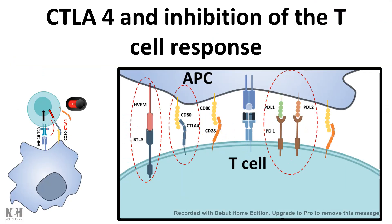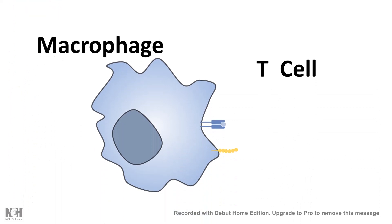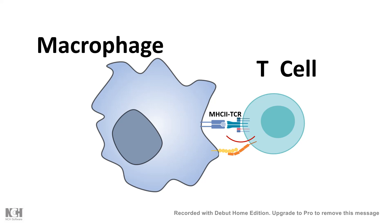In this video, I'm going to talk about CTLA-4 and inhibition of the T-cell response. T-cells are activated by antigen-presenting cells such as macrophages. Macrophages express MHC class 2, and MHC class 2-bound peptides are recognized by the T-cell receptor. This MHC class 2 and T-cell receptor-mediated interaction gives a stimulatory signal for T-cell activation.